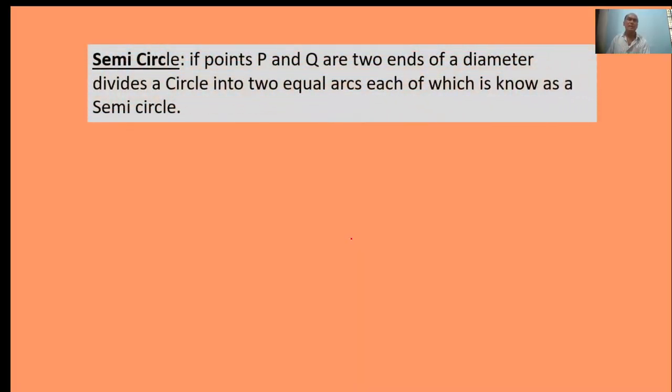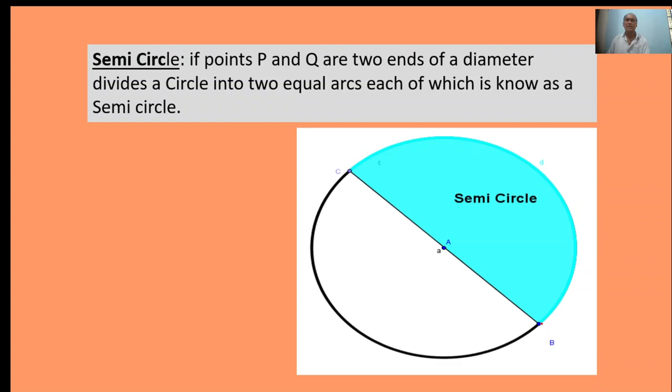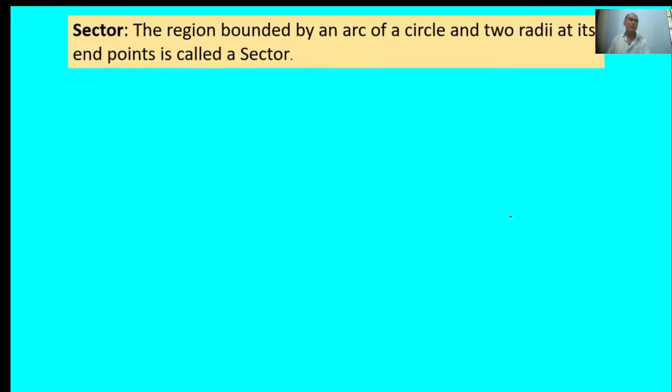Next, semicircle: if P and Q are two ends of a diameter dividing a circle into two equal arcs, each of which is known as a semicircle. Here, the circle has center point A. BC is a chord dividing it into two equal parts; each part is called a semicircle.